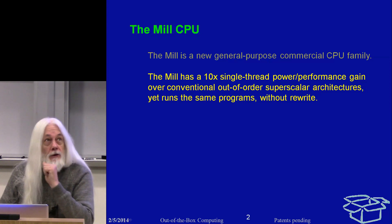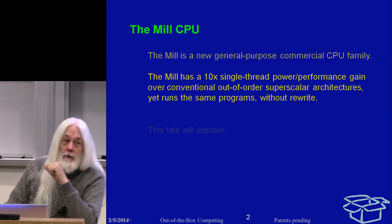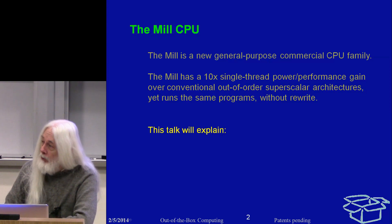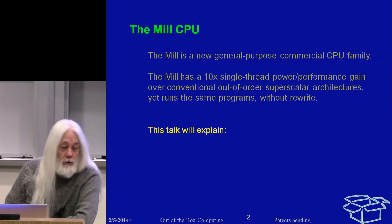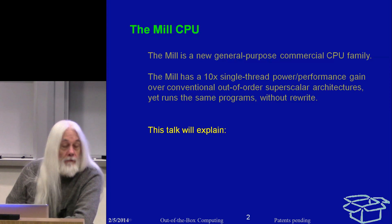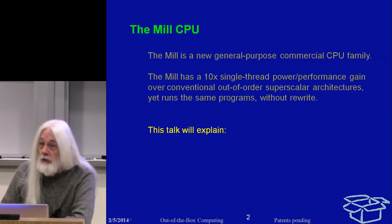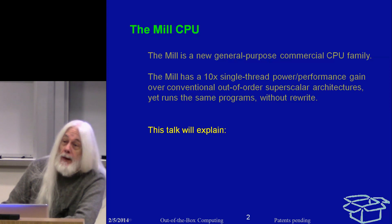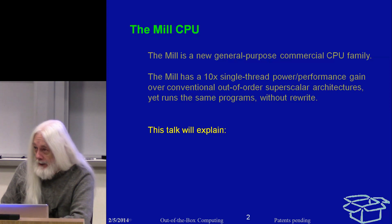It is an architectural advantage. It does so without requiring a rewrite of your program, and without requiring multiple cores or multi-programming. You can of course multi-core and multi-program Mills just like anything else, and it's just as much a pain on a Mill as it is on any other machine.